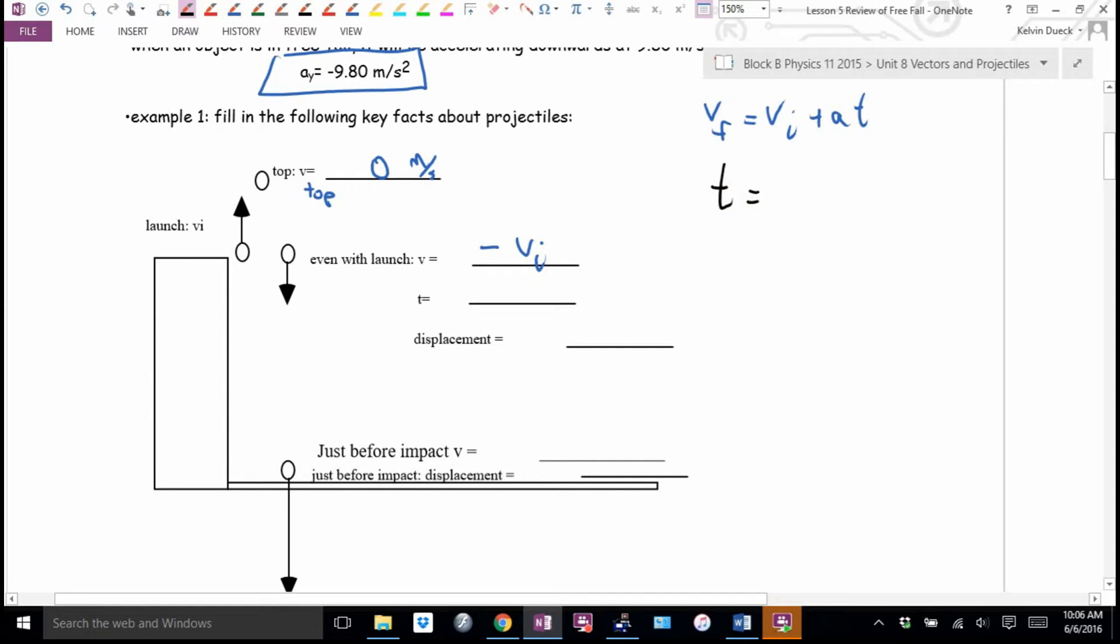So T equals what? Don't write that down yet. I'm going to write it down, but I'm just going to change it. VF minus VI over A. T, even with launch then, is going to be negative VI minus VI over A. Because we just decided that the V final, when you get even with launch, is negative. In fact, another way to write this is negative 2 times your initial velocity over A.